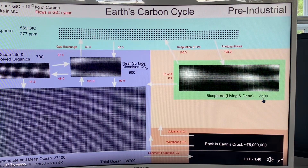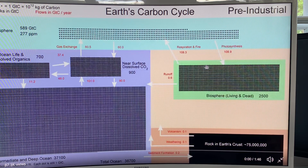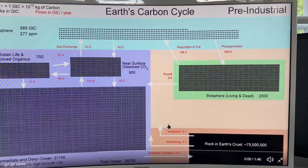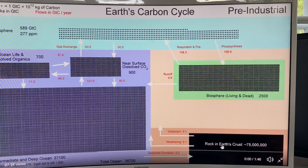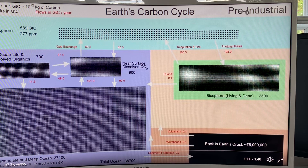In the biosphere, living and dead, there's 2,500 gigatons. By photosynthesis, every year 108.9 gigatons comes out of the atmosphere and is absorbed by plant material. Respiration and fire returns most of that — 108.3 gigatons — back to the atmosphere. Only 0.6 gigatons difference ends up in runoff going into the ocean. Volcanism contributes a very small 0.1 gigatons per year on average. Weathering takes out 0.1 gigatons, and sediments building up on the ocean floor account for 0.2 gigatons. The rock in the Earth's crust contains the vast majority of carbon: 75 million gigatons. This is pre-industrial. Now this animation cycles through to present day to show how these numbers change.